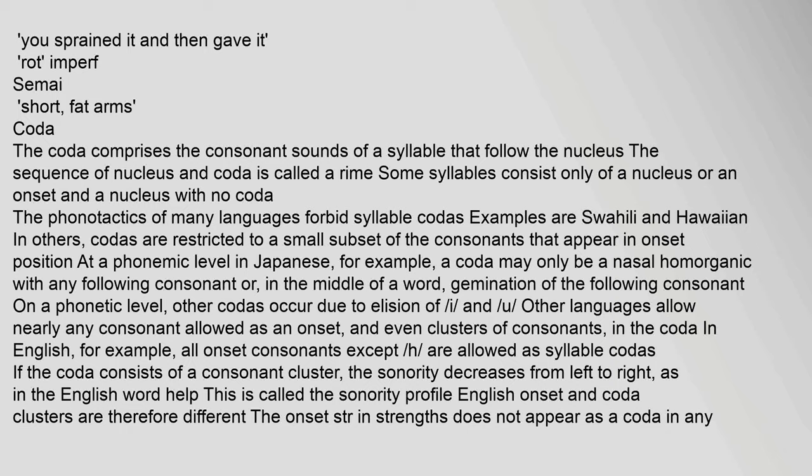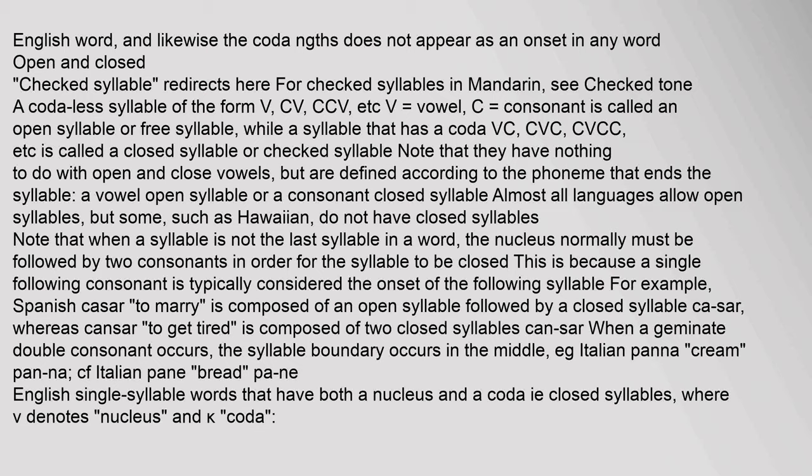Other languages allow nearly any consonant allowed as an onset, and even clusters of consonants in the coda. In English, all onset consonants except 'h' are allowed as syllable codas. If the coda consists of a consonant cluster, the sonority decreases from left to right, as in the English word 'help' — this is called the sonority profile. English onset and coda clusters are therefore different: the onset 'str' in 'strengths' does not appear as a coda in any English word.